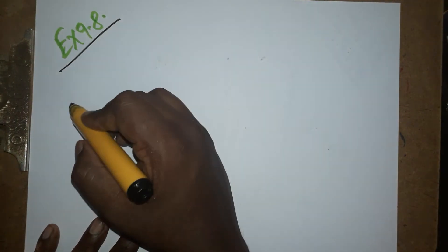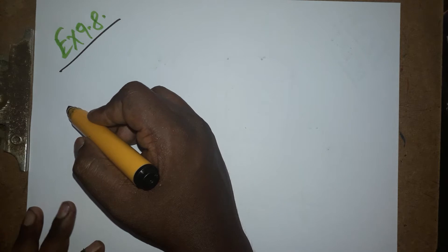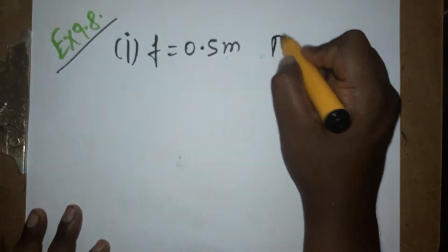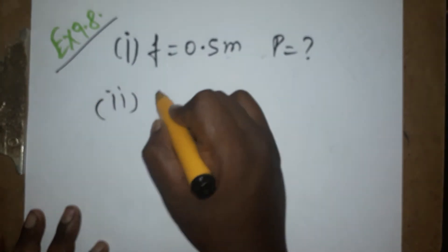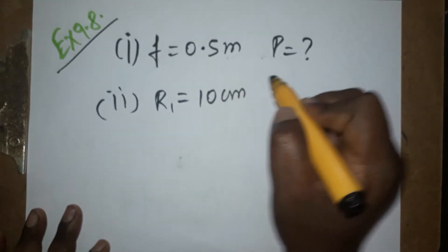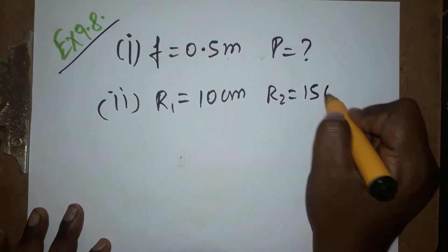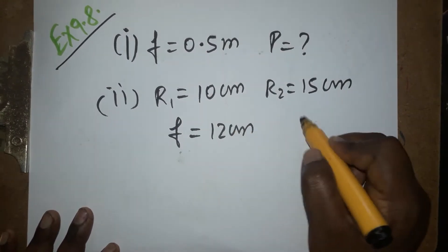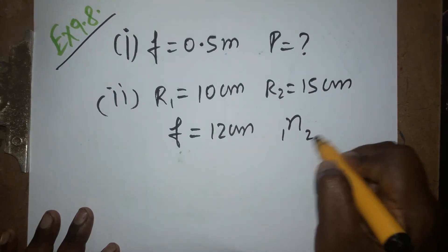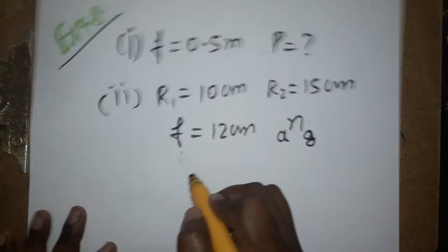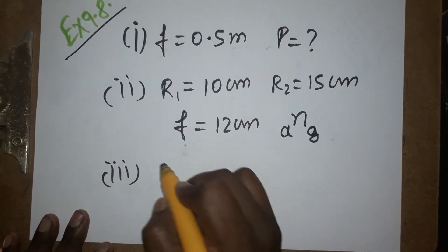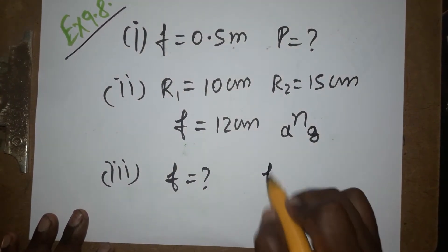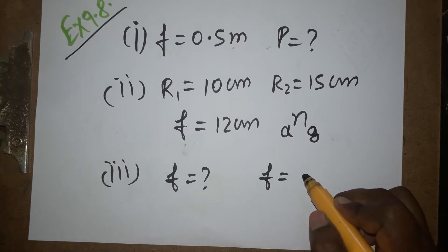Today we are going to learn Example 9.8, which is from Ray Optics for Class 12 Physics. There are three questions asked. First question: focal length equals 0.5 meters — what is the power? Second question: radius of curvature on one side is 10 centimeters, the other side is 15 centimeters, and focal length is 12 centimeters — what is the refractive index of the material (glass)? Third question: when the same lens is placed inside water, what is the new focal length? The focal length outside the water is 20 centimeters.